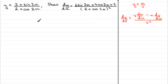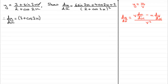So we should be able to differentiate this straight away. dy/dx equals the bottom of the fraction (2 plus cos 2x) multiplied by the differential of the top. The differential of 3 is 0, and the differential of sine 2x is 2 cos 2x. This result comes from the chain rule — I'll go through this at the end of the video.